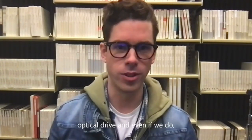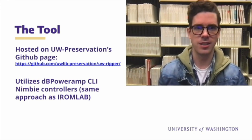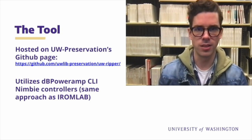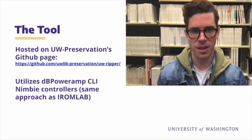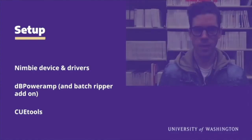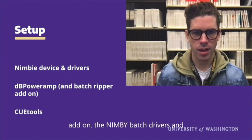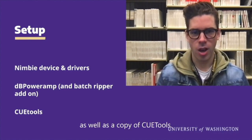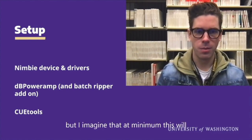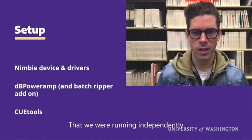I actually like dBpoweramp's method of safe ripping that minimizes wear and tear on hardware a little bit more, but so far we haven't burned out our optical drive, and even if we do, they're pretty cheap these days. The tool lives on our UW Libraries preservation department GitHub page. It uses the IRM Lab approach where we use the dBpoweramp command line controllers for the NimBie, so dBpoweramp is a necessary dependency even though we don't use it for the actual ripping. The tool is also written in Ruby. The core dependencies are simple: a copy of dBpoweramp and its batch ripping add-on, the NimBie batch drivers, the NimBie robot itself, and a copy of Qtools. We plan to expand this to include MediaInfo pretty soon, as it would enable extra integrated QC checks such as expected file length.